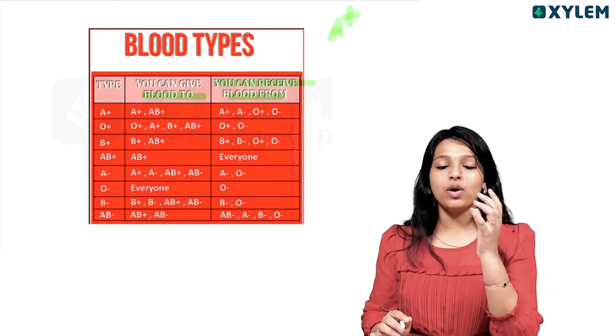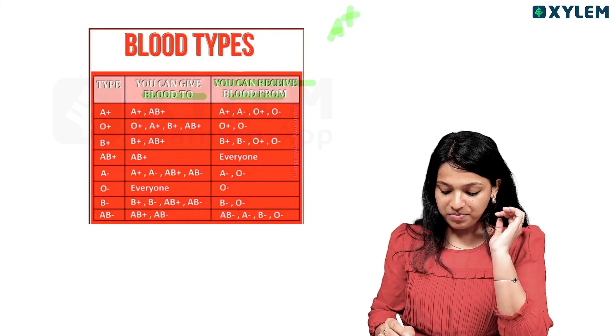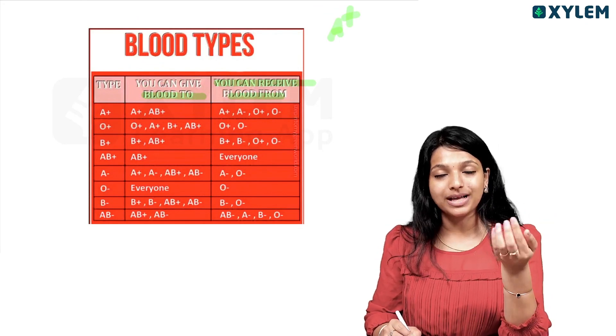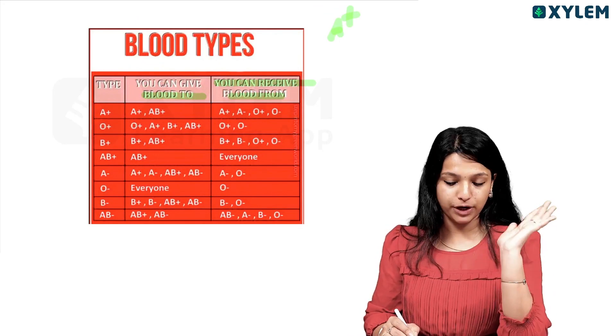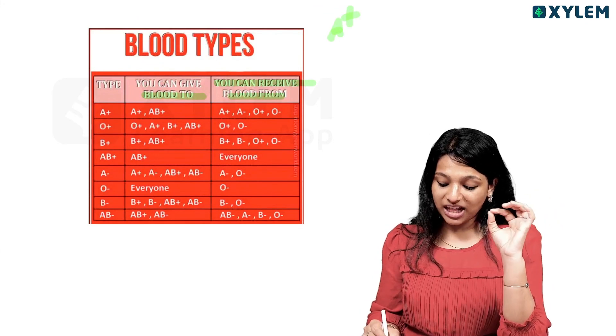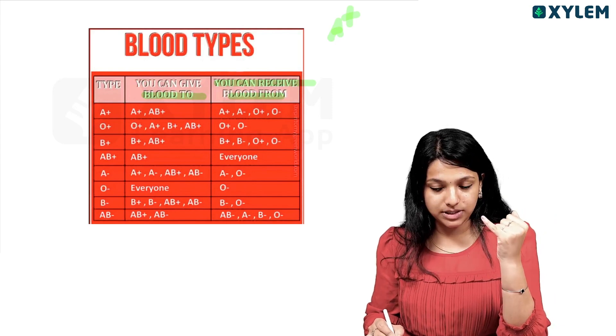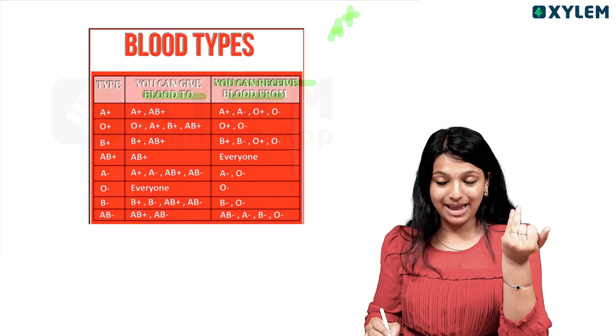If we have A positive, we can receive A positive or A negative blood, meaning all positive or all negative types compatible with A positive.